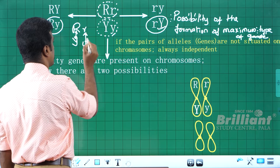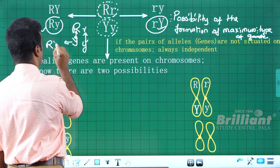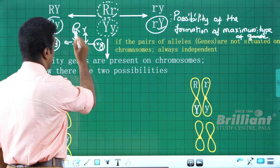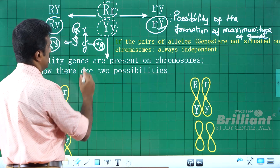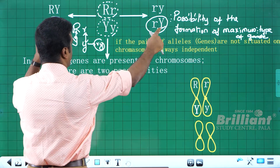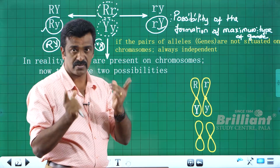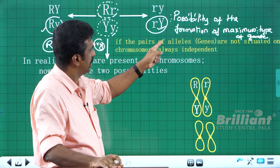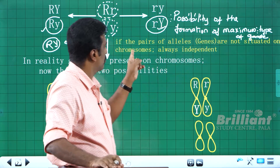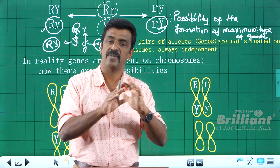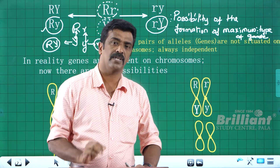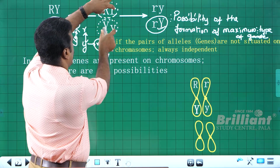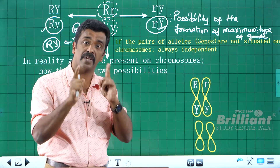So what is the impact? Segregation: Capital R, Capital Y, small r, small y. So Capital R Capital Y and small r small y — these two combinations are only produced. But if the pairs of alleles, that is genes, are not situated on the same chromosome, segregation as imagined by Mendel is always independent. So the idea — we don't know that the gene is actually on a chromosome. Any two genes, any two pairs of alleles — they are independent.